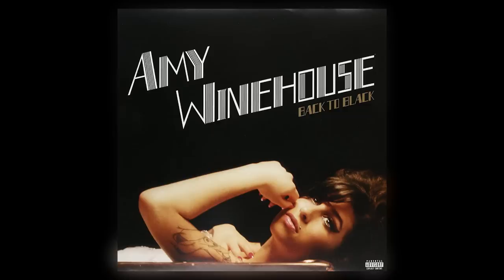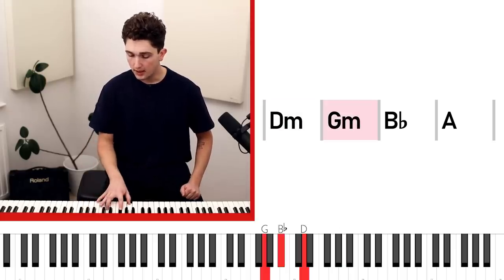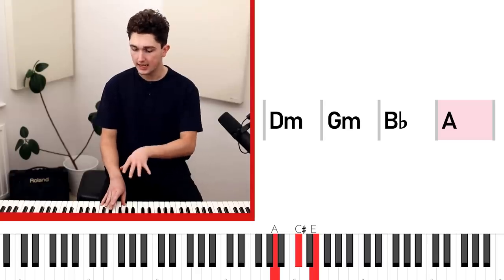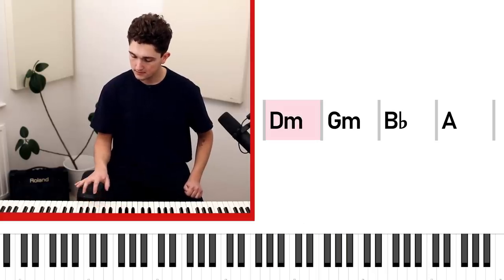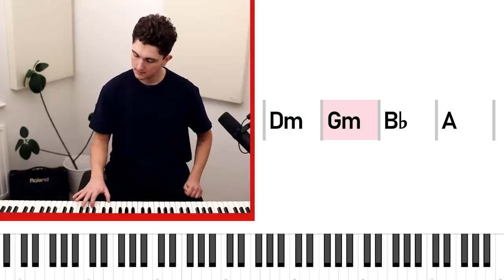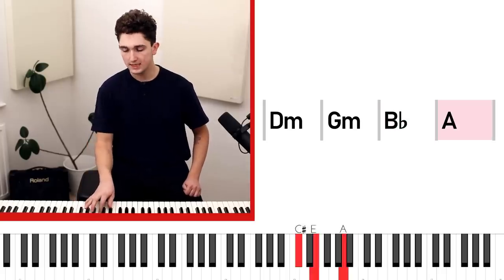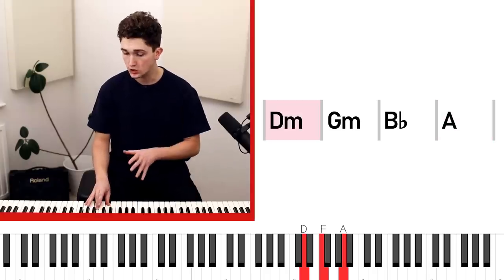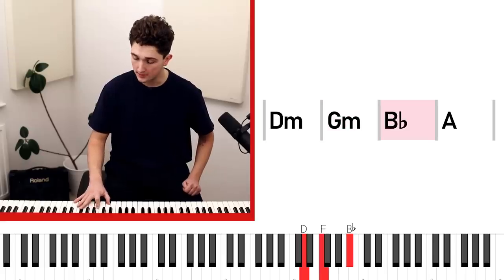Let's take a look at another song, Back to Black by Amy Winehouse. This song is based on the chord progression D minor, G minor, B flat, and A. But the chords aren't played like that, they're not played in their root positions, they are voice led. Once again, the chords are being played with the minimal amount of movement between each chord, and that results in this really smooth, satisfying progression.